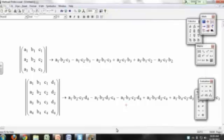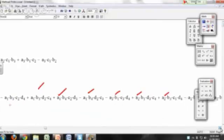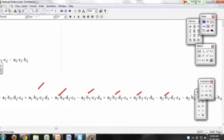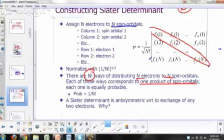How many terms do I have here? 1, 2, 3, 4, 5, 6. Lost count. But you're going to have 4 factorial terms, right? And that's 4 times 3 times 2 times 1. There's 24 ways of distributing 4 electrons to 4 spin orbitals. Assigning 4 electrons to 4 spin orbitals.